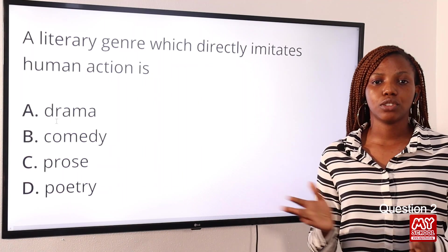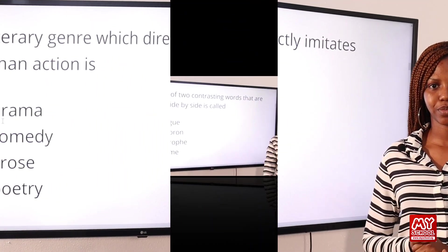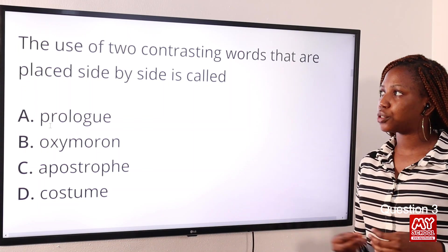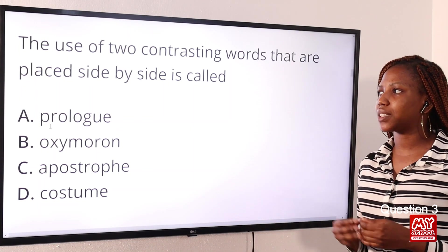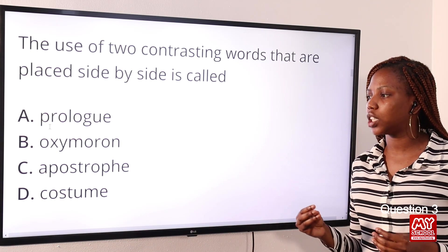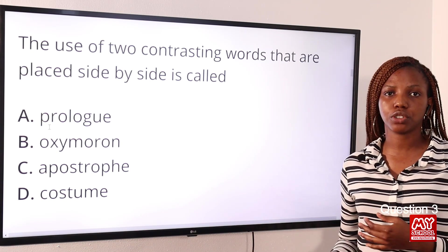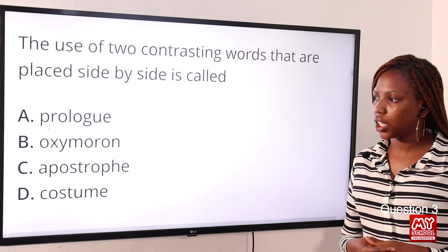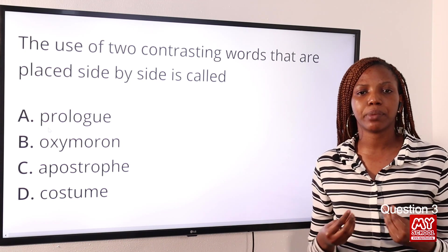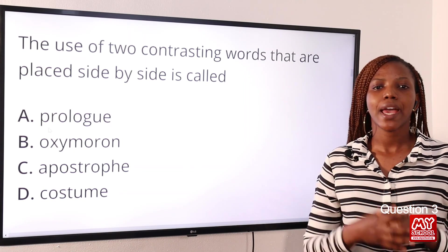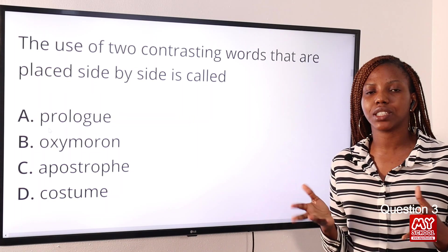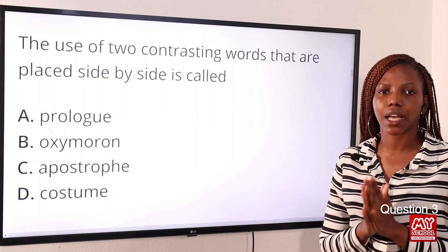Question three: the use of two contrasting words placed side by side is called Option A: prologue, Option B: oxymoron, Option C: apostrophe, Option D: costume. The answer is Option B: oxymoron. Oxymoron is placing side by side two contradictory, opposite words in a line of poetry.